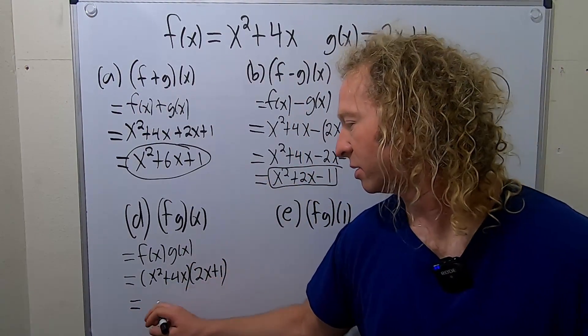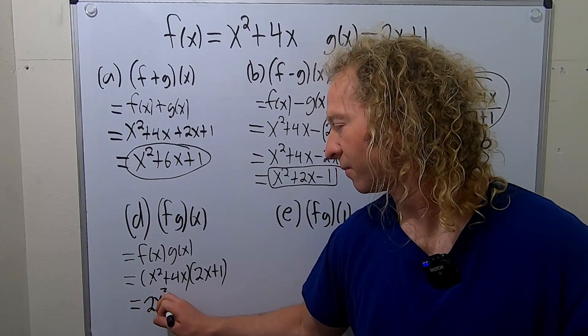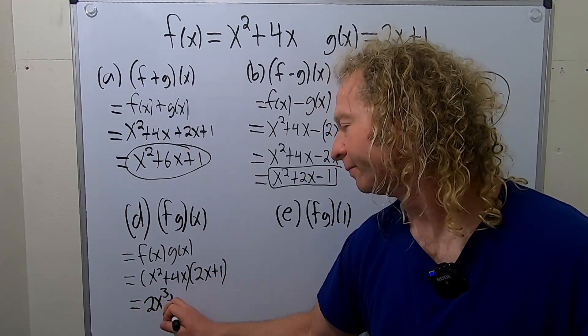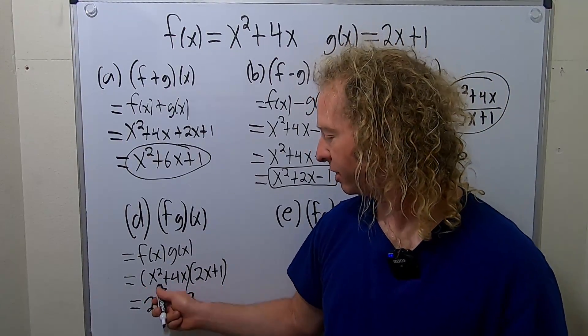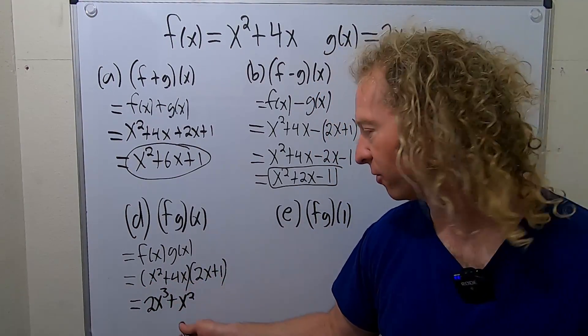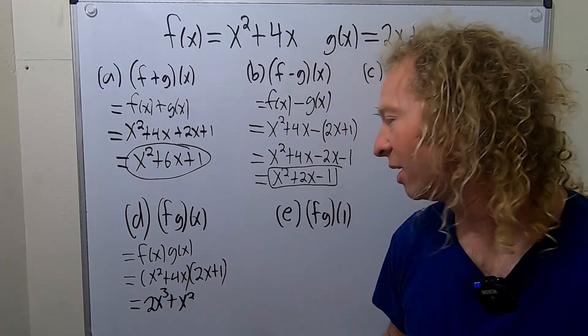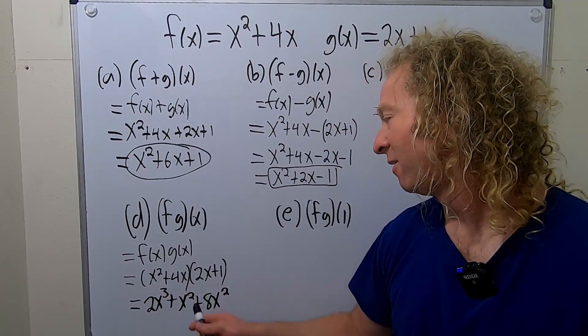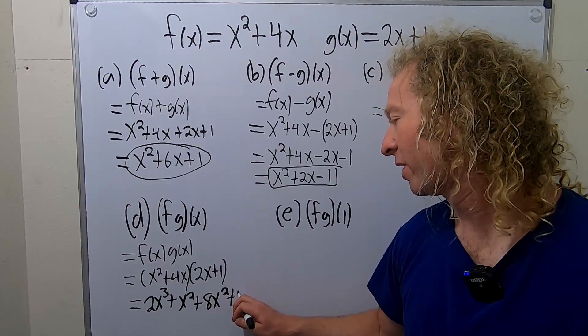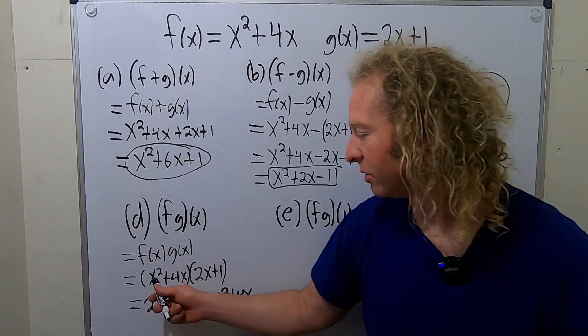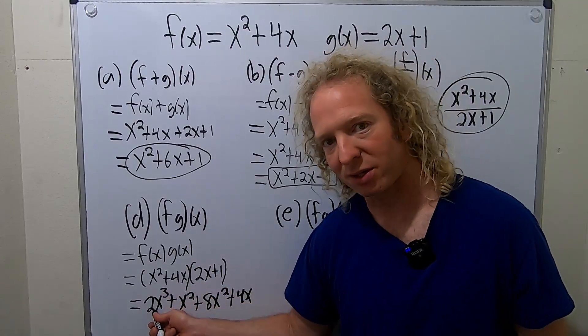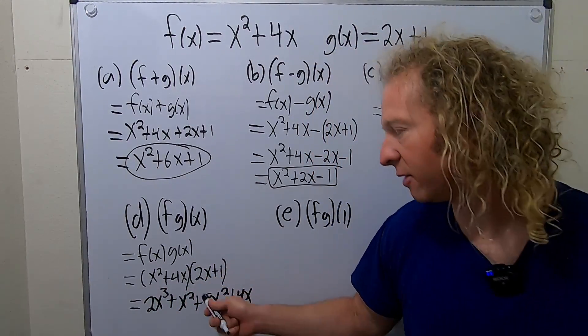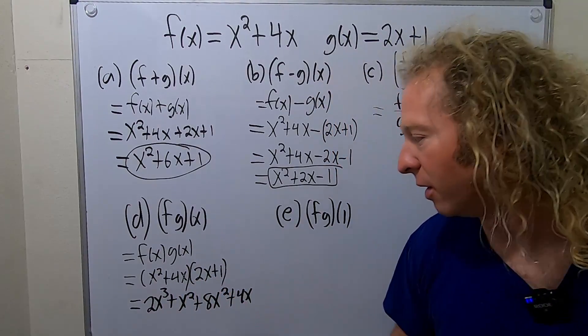So x squared times 2x is 2x cubed. And x squared times 1 is x squared. All right. So this times this is this. This times this is this. Now you distribute the 4x. 4x times 2x is 8x squared. 4x times 1 is 4x. Let me go over that again just to make sure that I did it right. So x squared times 2x is 2x cubed. x squared times 1 is x squared. Good. 4x times 2x is 8x squared. 4x times 1 is 4x. Boom. We got this.